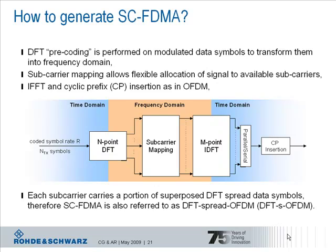The DFT precoding is the essential difference between downlink and uplink. What does DFT do? It is a mathematical operation, but compared to OFDM in the downlink — where each subcarrier carries just one specific modulation symbol — the DFT takes the symbols and spreads them over the available subcarriers. In that manner, each subcarrier carries a portion of superposed symbols. Therefore, Single Carrier FDMA is also referred to as DFT-spread OFDM.